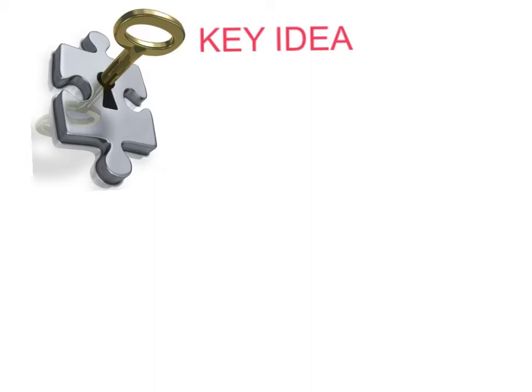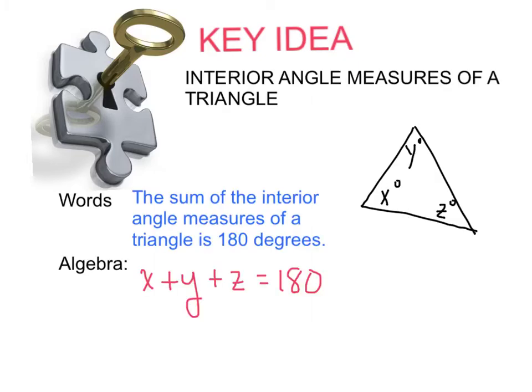Here is your key idea: interior angle measures of a triangle. This is something that is review for you, or should be review — you have been taught this last year. In words, here is what this says: the sum of the interior angle measures of a triangle is 180 degrees. If you add up all three angles of a triangle, that is going to give you 180 degrees.